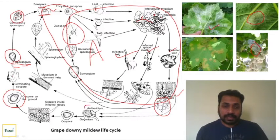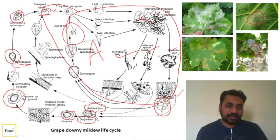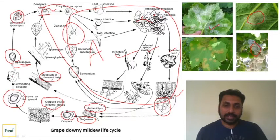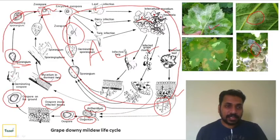Once the pathogen senses unfavorable weather conditions, the fungi switch to a sexual stage. This involves the antheridium (the male structure) and oogonium (the female structure). Contact between antheridium and oogonium takes place, forming a resting structure known as the oospore. When suitable weather conditions prevail again, this oospore will germinate. The oospore can be seen in infected leaves, and dormant mycelia can be seen in the twigs.